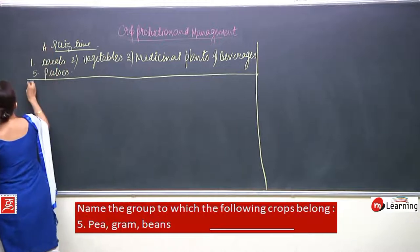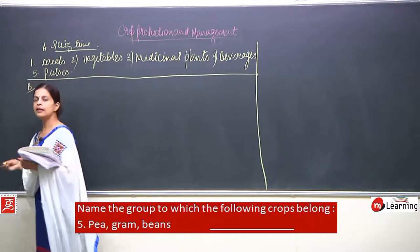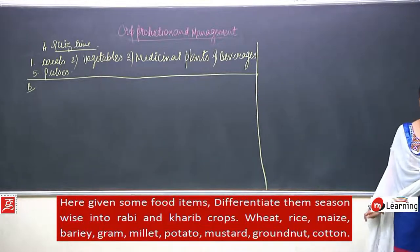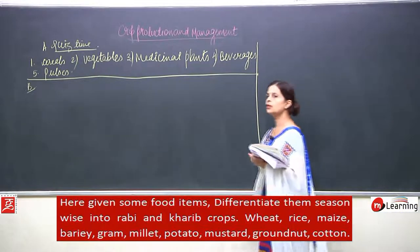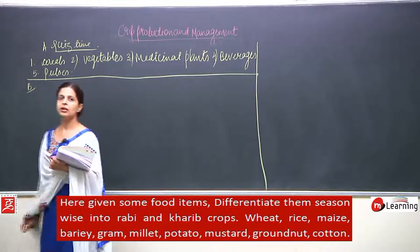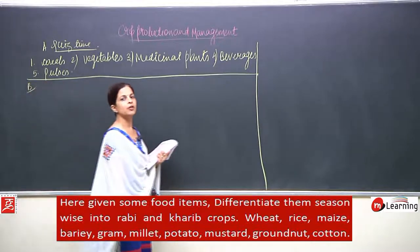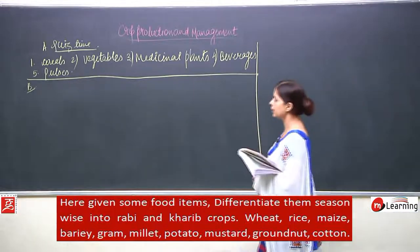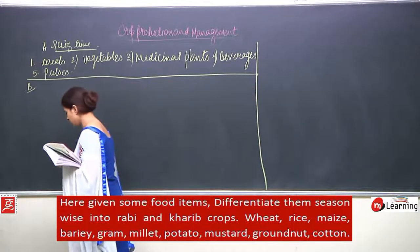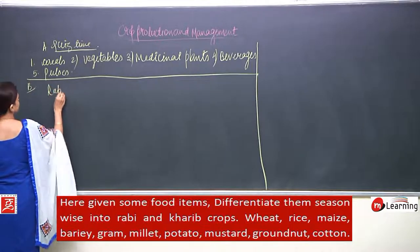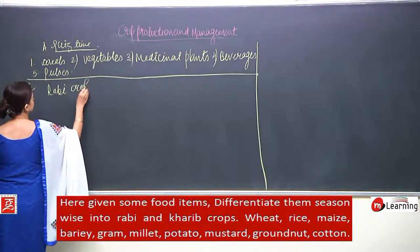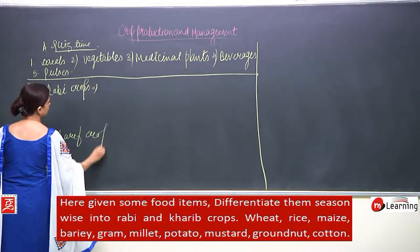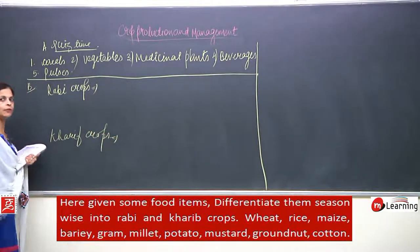This was part A. Now part B — they have given certain Rabi and Kharif crops mixed together. We have to sort out whether these are Kharif or Rabi crops. I will write Rabi crops and Kharif crops as two columns, and in this way you will understand which crop comes in which category.